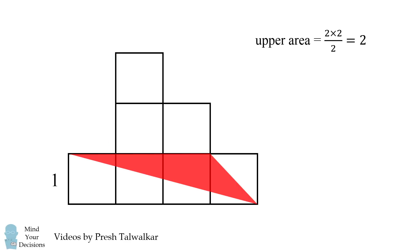Now let's calculate the area of this lower triangle. This has a base of 3 and a height of 1. So its area will be equal to 3 times 1 over 2, which is equal to 1.5.